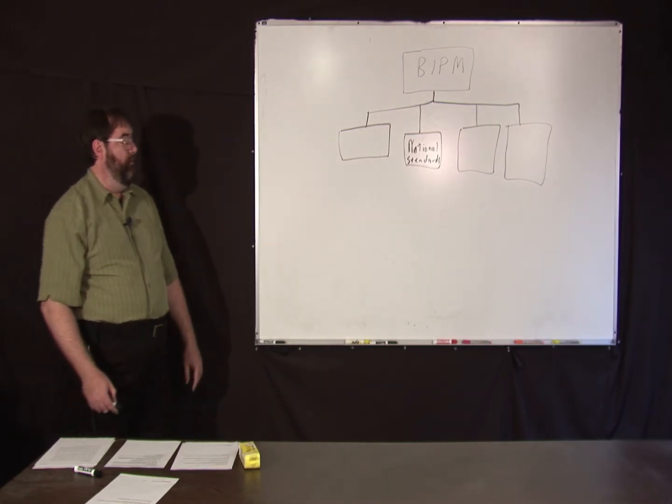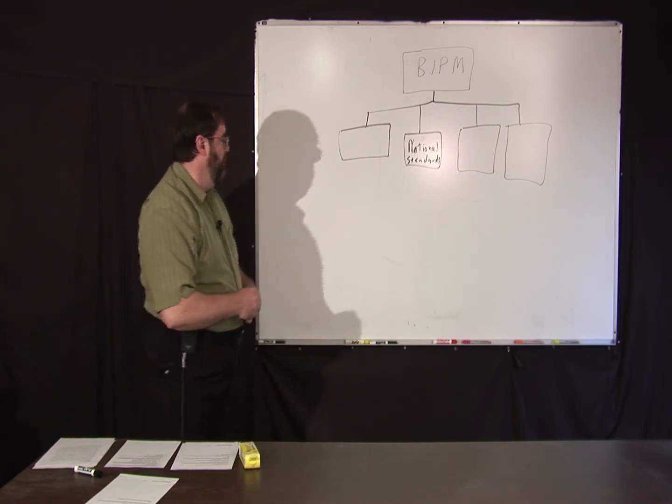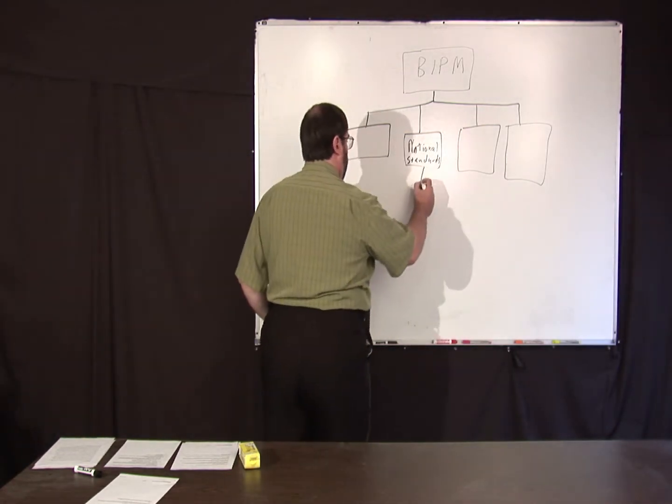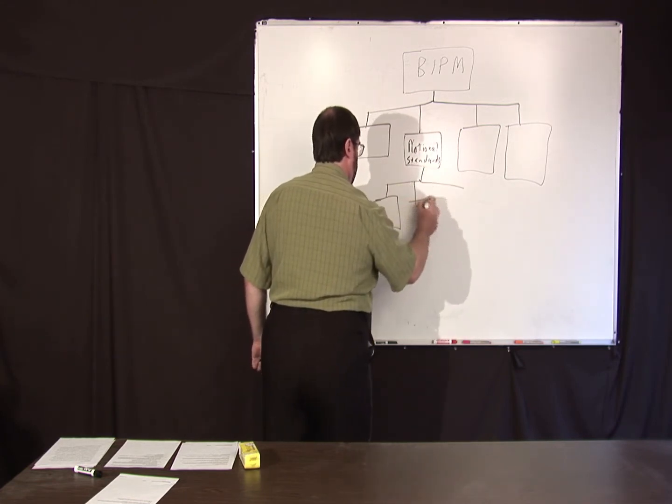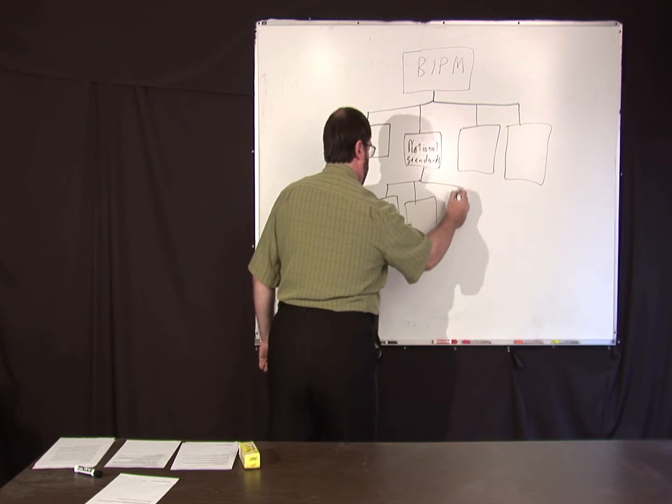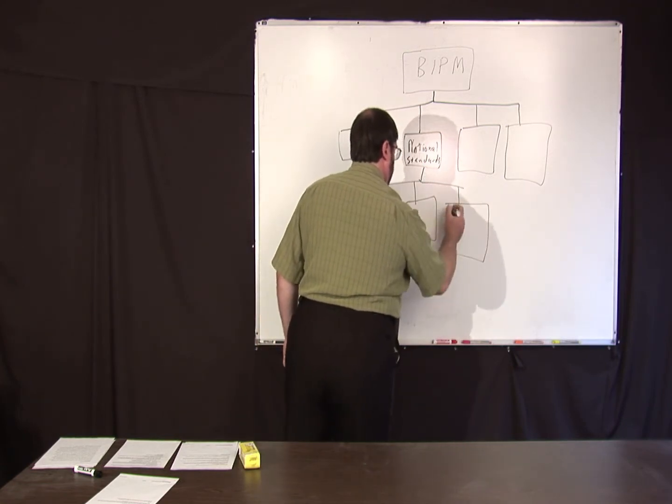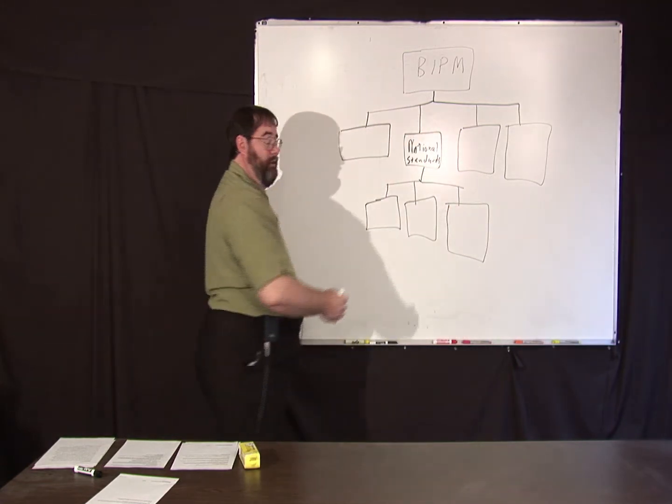This might be used to then, various companies and institutions might have their own standards calibrated. And so on. This is a traceability chain.